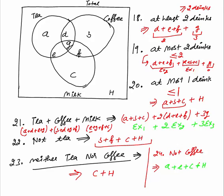These were the basics of three variable Venn diagrams. I have discussed 24 types of concepts that can be asked in any three variable Venn diagram question. Once you understand these basics, it will be very easy to solve every kind of question in three variable Venn diagrams. Thank you.